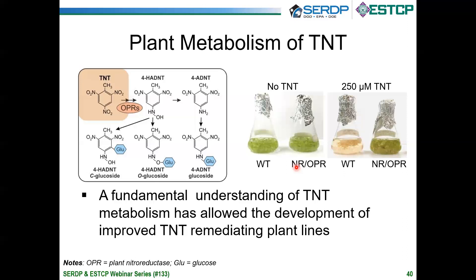This works remarkably well. Here you can see wild type plants that are not transformed — and transgenic lines in liquid media containing no TNT: the plants are green and healthy. In the presence of 250 micromolar TNT, the wild type plants are dead, chlorotic, and have removed none of the TNT from the medium. Whereas the transgenic lines are green, healthy, have increased in biomass, and have removed all the TNT from the medium. In fact, these plants work so well they'll remove basically saturating concentrations of TNT from the medium. This was an exciting result.